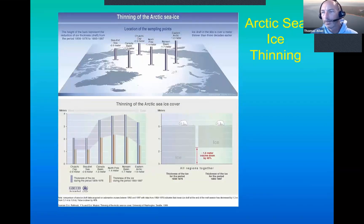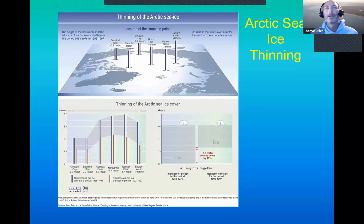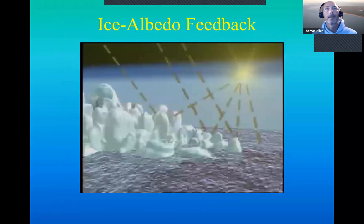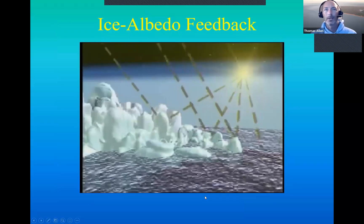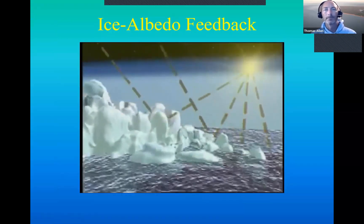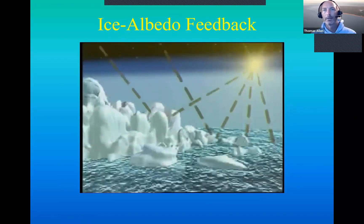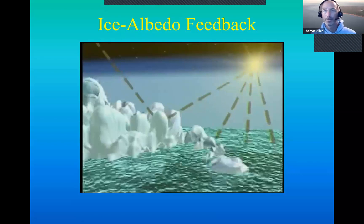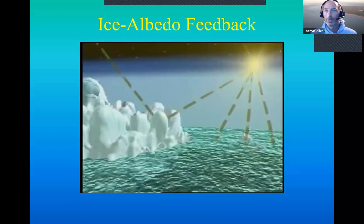Another factor we have documented is thinning and lateral reduction of sea ice cover — here's some documentation of that. Polar bears have been a big concern because they use the ice for hunting; it is essentially a key habitat for them, and without it they are forced into a much more marginalized survival situation. I'll play this video of the ice albedo feedback system. What you're seeing is sunlight slowly increasing the temperature of the ocean, which increases the melting of the ice, which increases the area exposed to direct sunlight, which increases the absorption of heat.